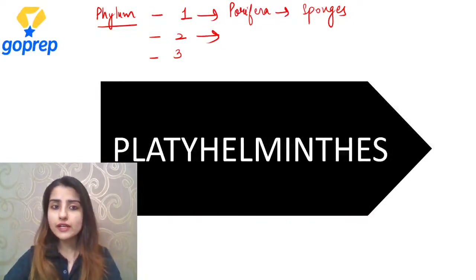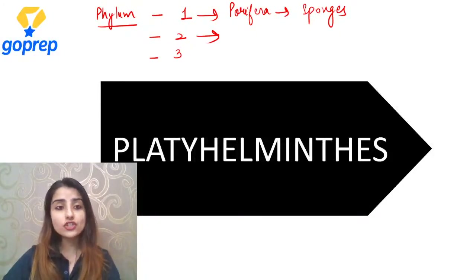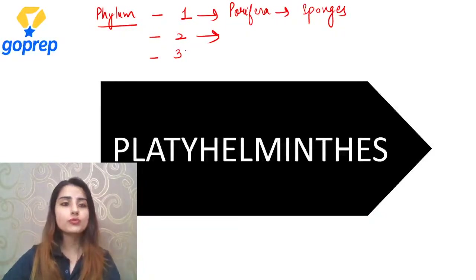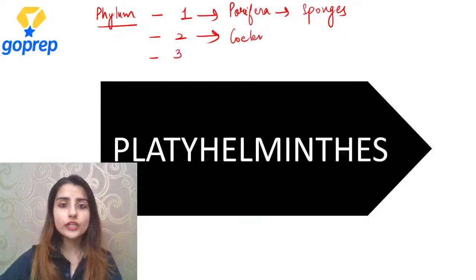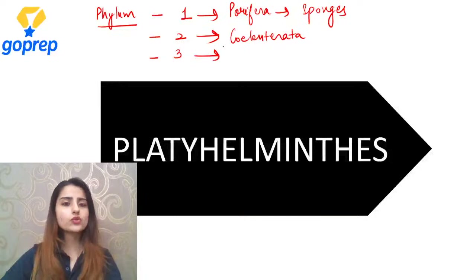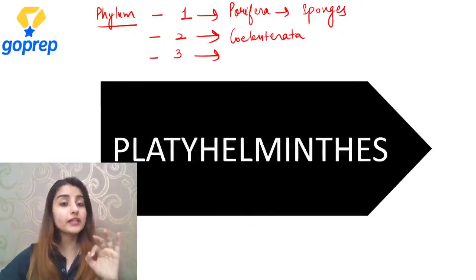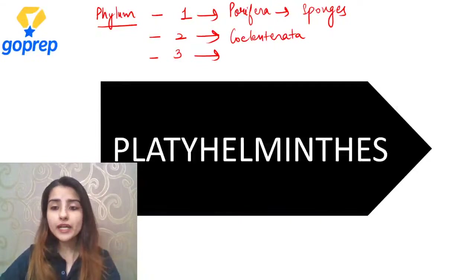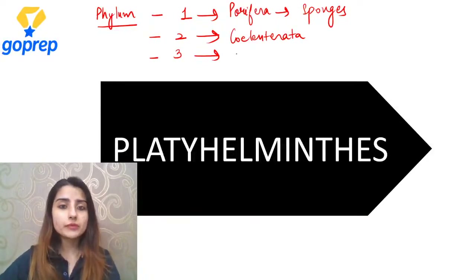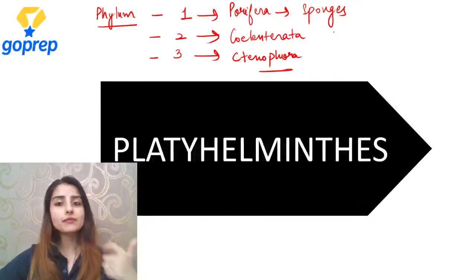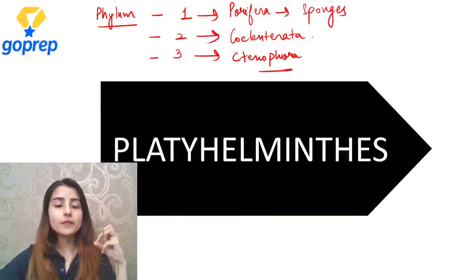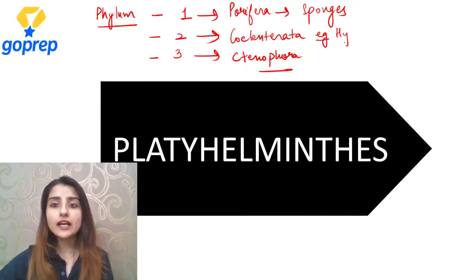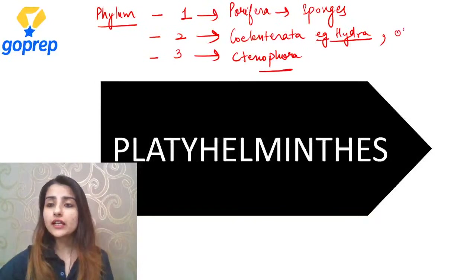Second phylum - we had to advance to tissue level of organization. That is going to be Coelenterata. Very good, Shahina. Then the third one, whose properties almost resemble Coelenterata, but they were not having nidoblast cells - Ctenophora, which shows bioluminescence. These three phylums we have already done: sponges (pore-bearing animals), Coelenterata (tissue level of organization). Examples we did: Hydra, Obelia, jellyfish, and Aurelia.